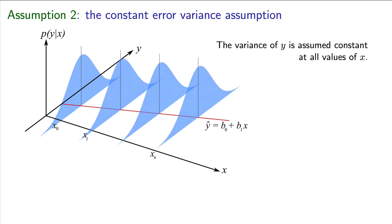What this assumption is stating is that the variance, or standard deviation, of these blue histograms is the same, no matter what the level of x is, low values of x or high values of x. We call this the constant error variance assumption.